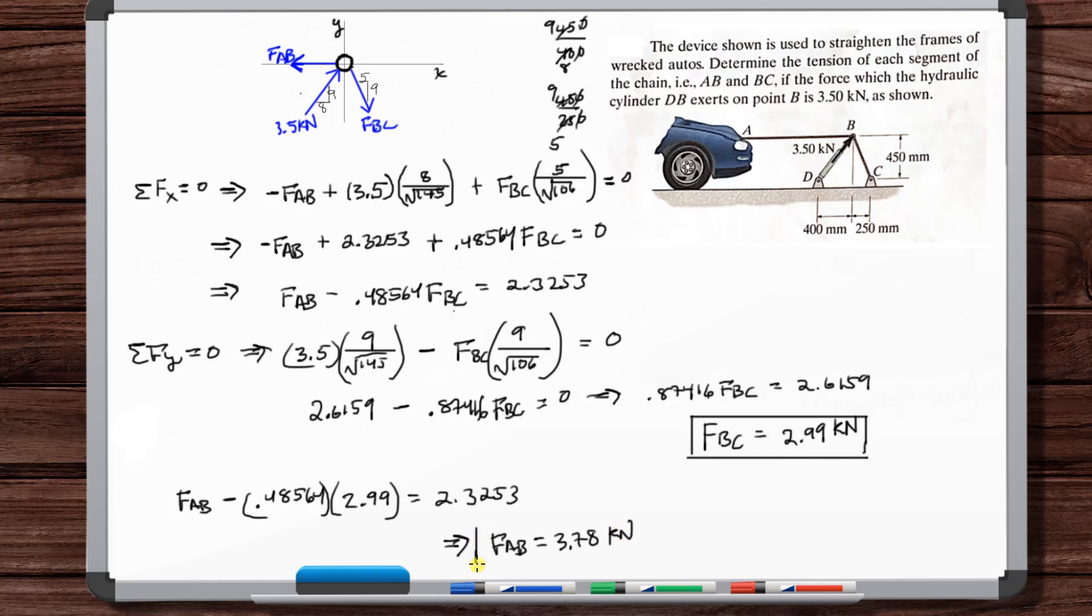So 3.78 kilonewtons. And that is the tension in F_AB. So there you go, that is your answers.